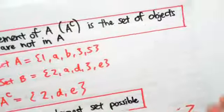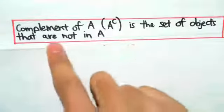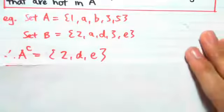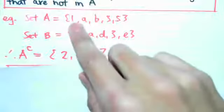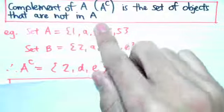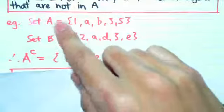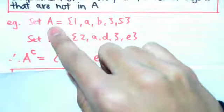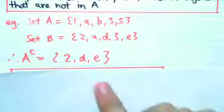Next is the complement of A, denoted Aᶜ, which is a set of objects that are not in A. Going back to our example, Aᶜ cannot be 1, A, B, 3, or 5, because it has to be a set of objects not in A. The reason we didn't copy the entire set B is because we have common objects A and 3 between B and A — so the complement of A cannot include A and 3 either. Therefore Aᶜ equals {2, D, E}, which are the objects not in A.